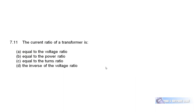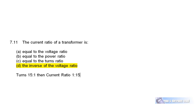Question 7.11: The current ratio of a transformer is the inverse of the voltage ratio. So if the voltage ratio is 10 to 1, then the current ratio is 1 to 10. The reason is that if you step voltage up, you must step current down for the power to remain the same. The current ratio of a transformer is the inverse of the turns ratio — if the turns ratio is 15 to 1, the current ratio is 1 to 15.